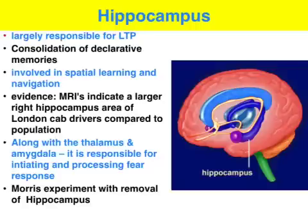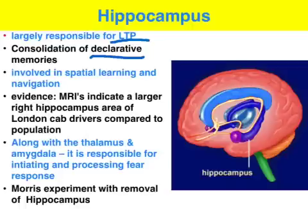Now let's look at four brain structures involved in learning. Starting with the hippocampus — as we remember from Unit 3, it's largely responsible for long-term potentiation, the consolidation of short-term to long-term memory, specifically declarative memories. It's also involved in spatial learning and navigation.